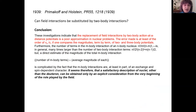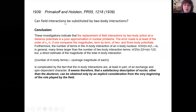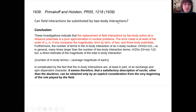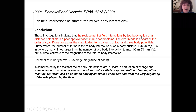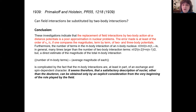However, already from 1939, Primakov and Holstein asked themselves: if we consider nuclei from the point of view of field theory, can these field interactions be substituted by two-body interactions? They concluded that the replacement of field interactions by two-body action-at-a-distance potentials is a poor approximation for nuclear problems. The error is at least of the order of V/C when comparing the magnitude of two- and three-body potentials term by term.